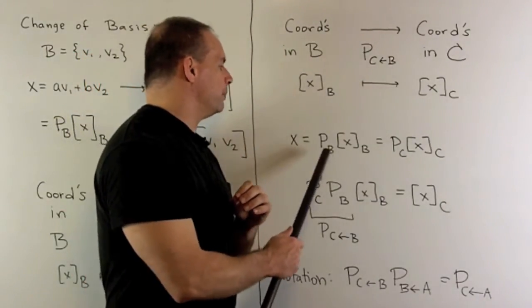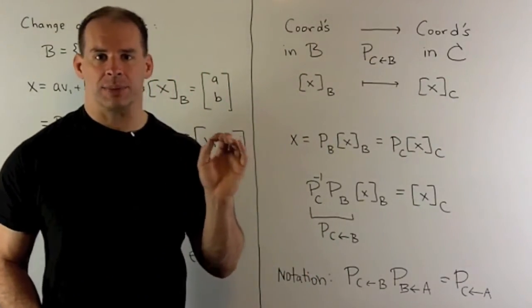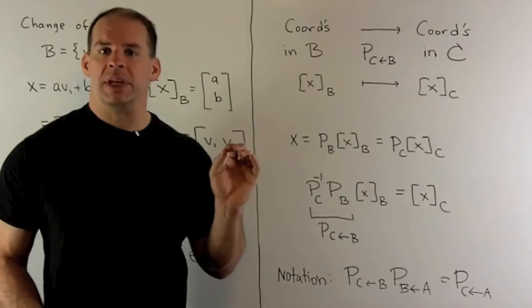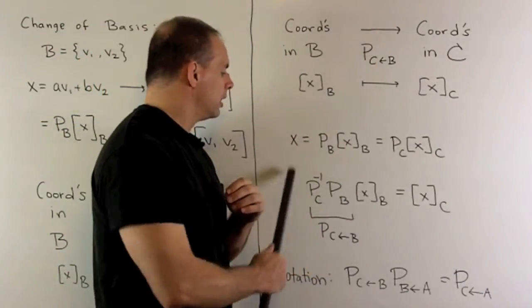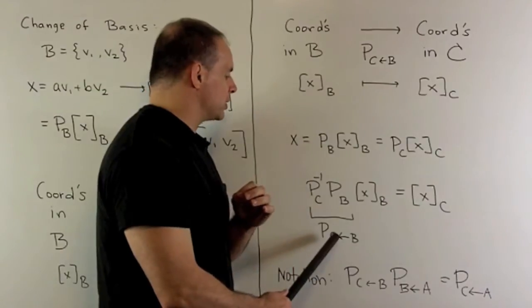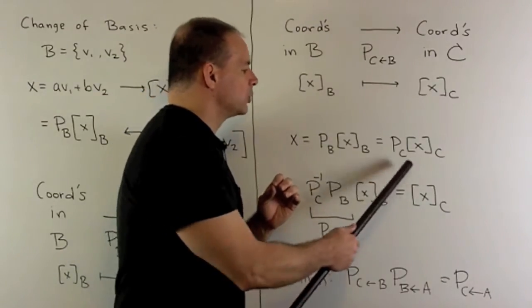let's take a vector X and write it in two ways. So, I can write it as P_B X_B and P_C X_C. If we move the P_C to the other side with an inverse, we're going to get our change of basis matrix.